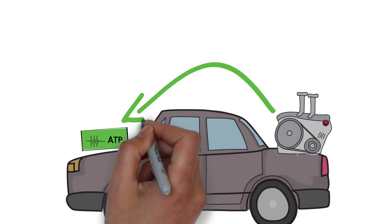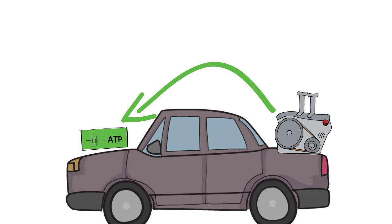The car can't run directly on the diesel, just as you can't run directly on the glucose. It must first turn the diesel into usable energy—electricity, or in our cases, ATP.